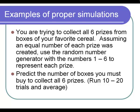Now you're going to run ten to twenty trials of this, and then average together. Your average number of boxes should be anywhere from like thirteen, fourteen, fifteen, or sixteen boxes of cereal, on average necessary to get all six prizes.